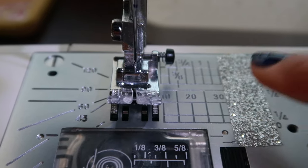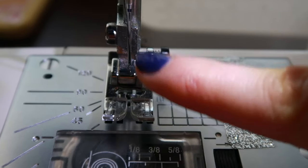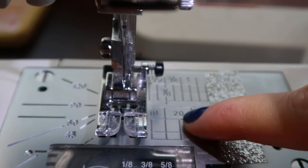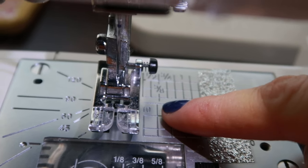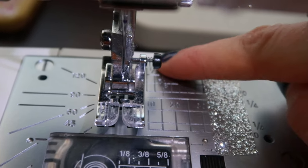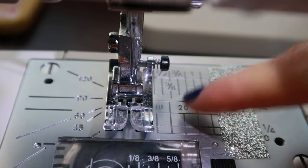For sewing our plain seam we are going to want to pay attention to the lines that are etched on our needle plate which is right underneath our presser foot. You're going to notice that there are different measurements. We are specifically going to pay attention to the 5/8 inch seam allowance line when we are sewing a plain stitch.